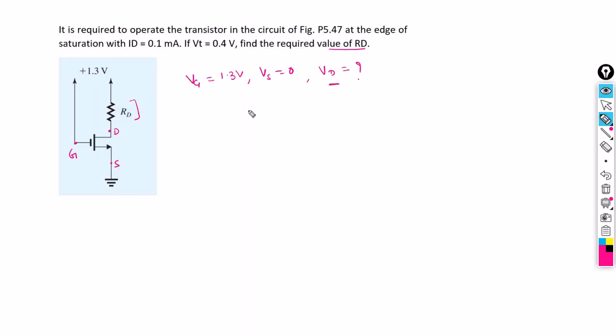In the question, we are given the condition of edge of saturation region. At the edge of saturation region, Vds is equal to Vgs minus Vt.